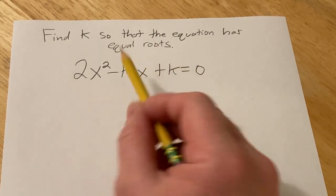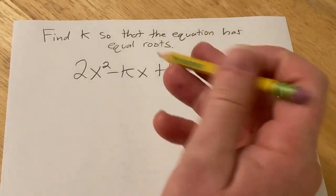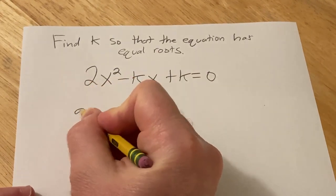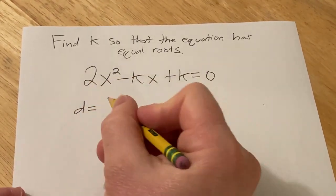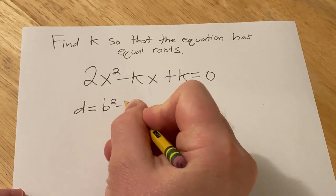And so by equal roots, they mean a repeated real root. So recall there is this quantity called the discriminant, which I'll call d, which is given by b² - 4ac.